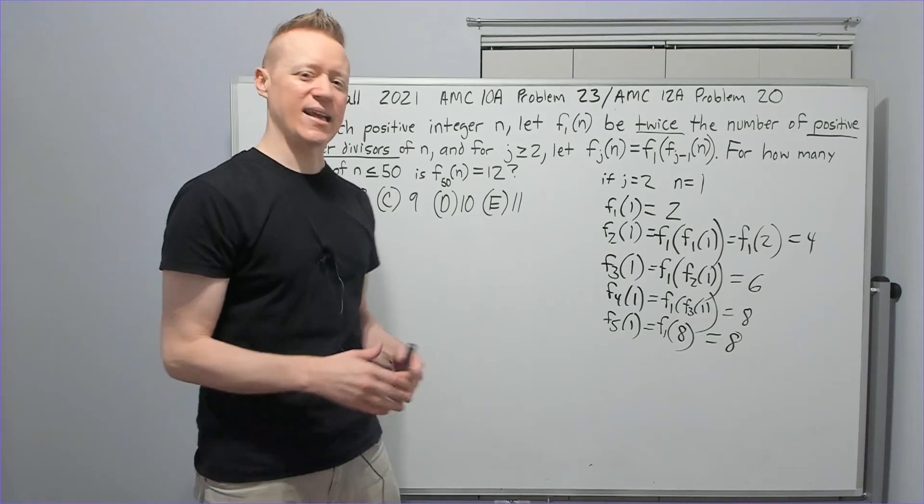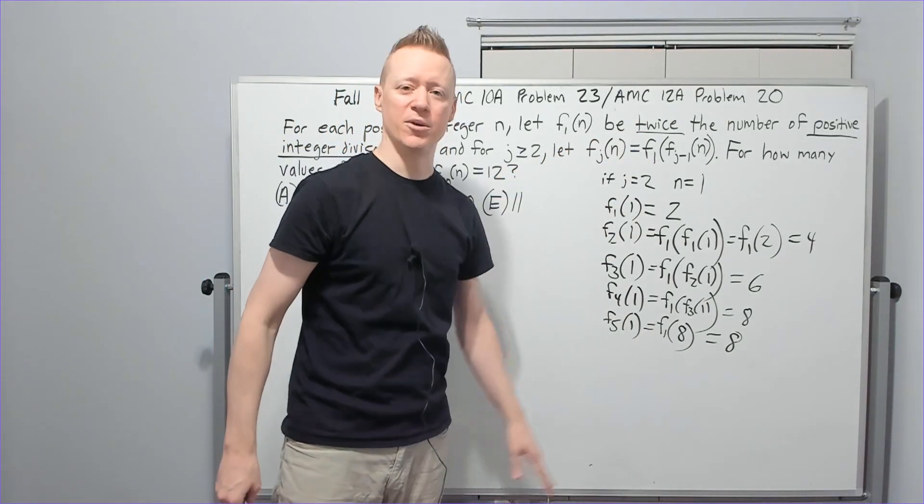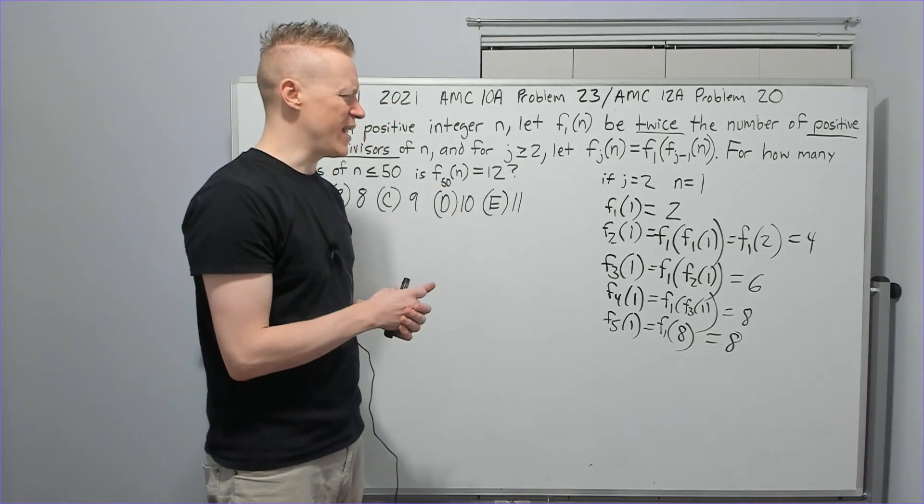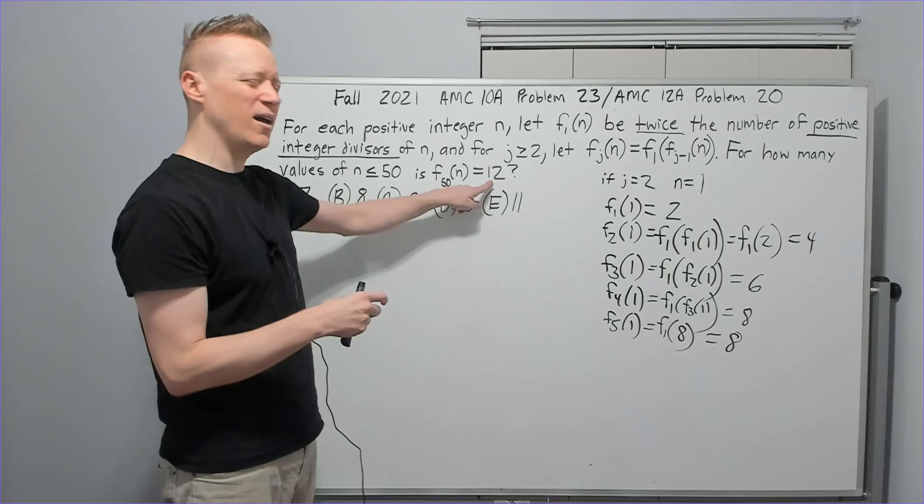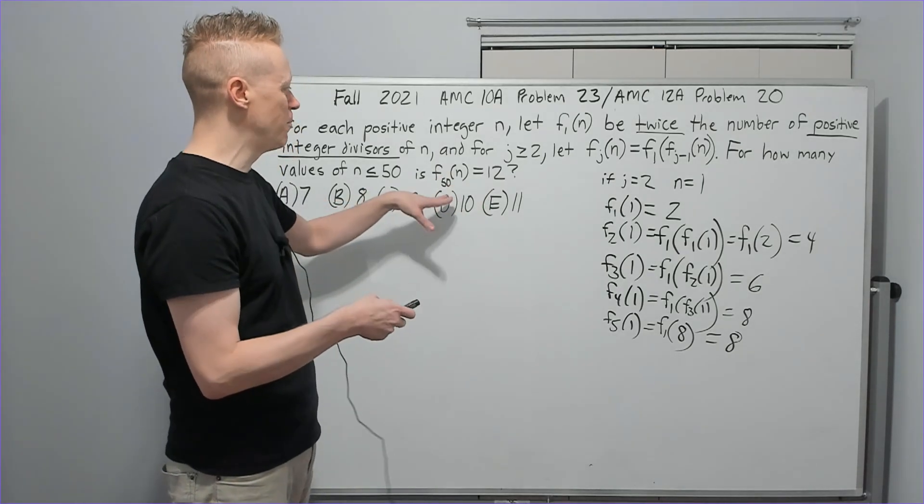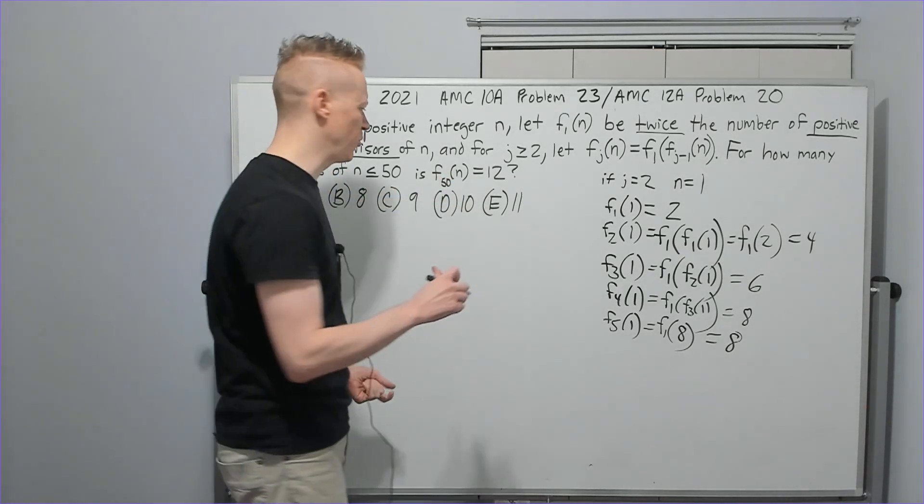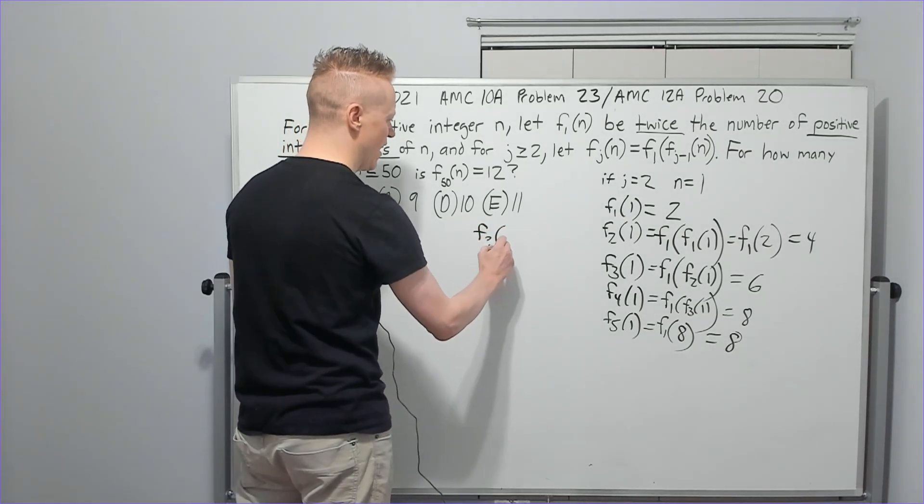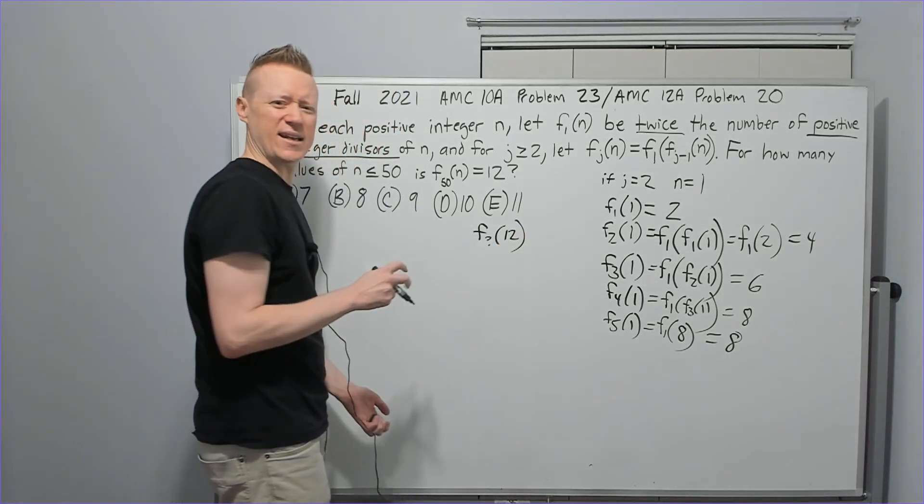Well, in that case, none of these numbers are going to work. 1, 2, 4, and 8. We got rid of some, but what's going on here then? How are we going to generate 12 with some number? It looks like at some point... I got curious at this point, and I said, what if we said f sub something of 12? What would that equal?